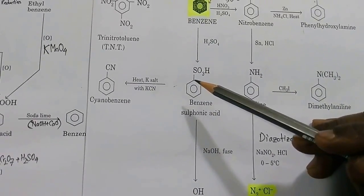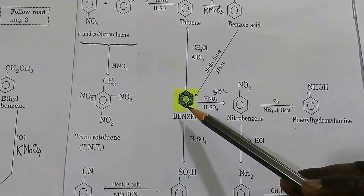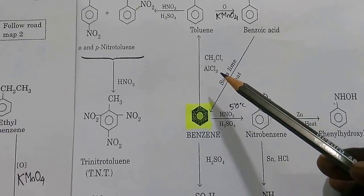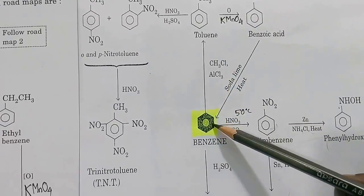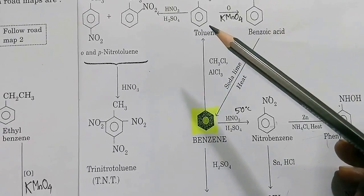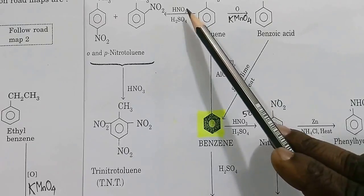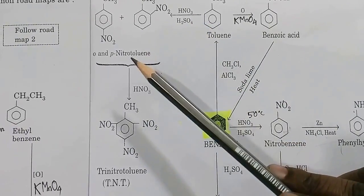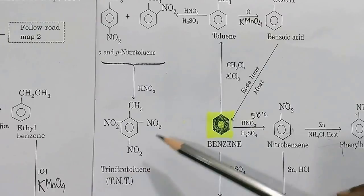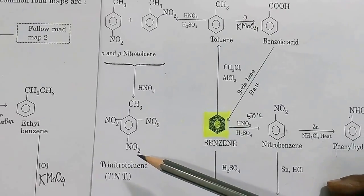Benzene sulfonic acid treated with KCN gives cyanobenzene. Benzene can be treated with methyl chloride in presence of anhydrous AlCl3 to get toluene — this is Friedel-Crafts alkylation (earlier we did Friedel-Crafts acylation for acetophenone). Toluene can be nitrated with HNO3 and H2SO4 to give ortho and para-nitrotoluene, and further treatment with HNO3 gives the explosive TNT — trinitrotoluene.